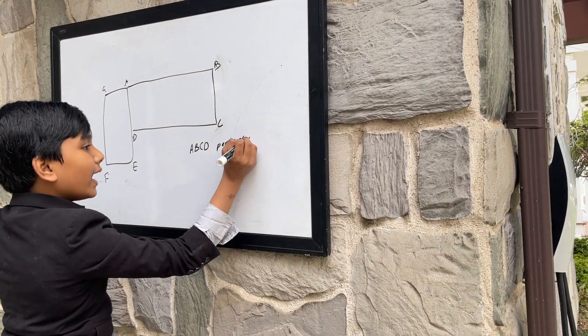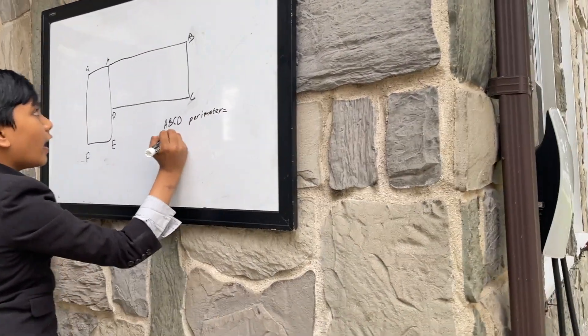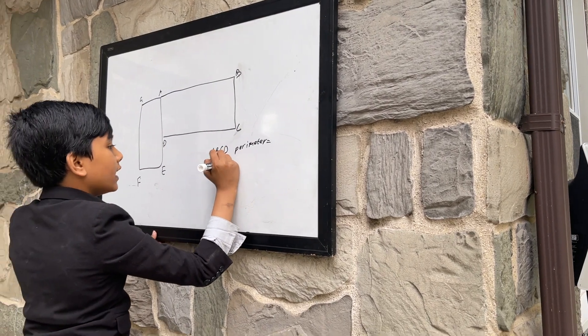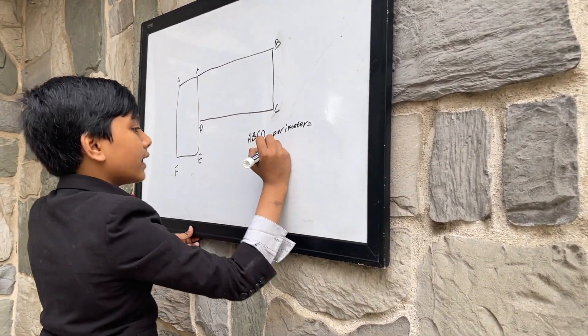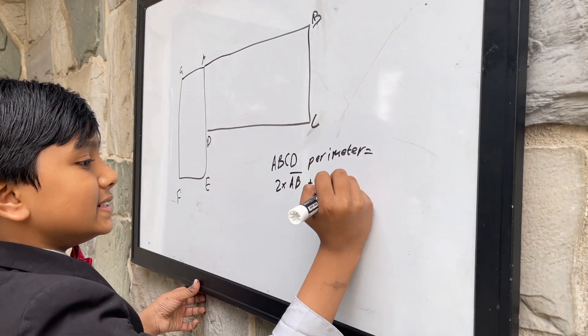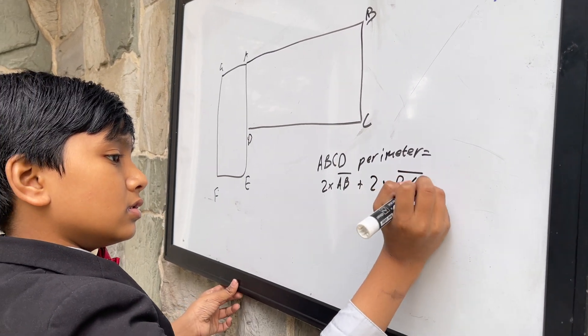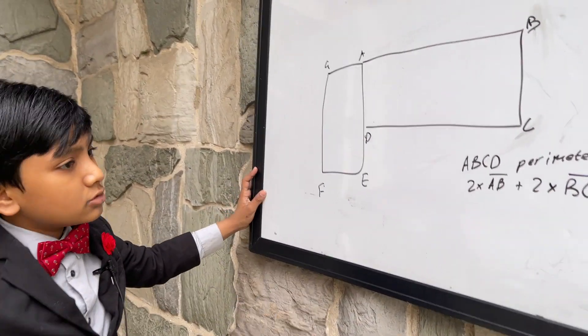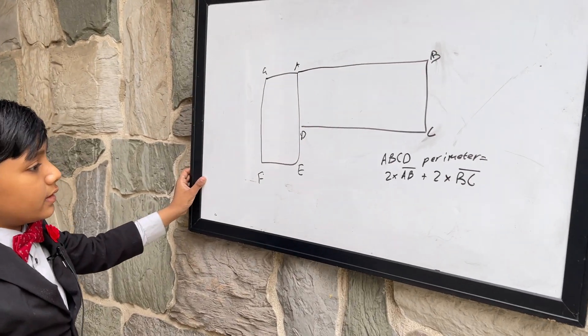And to do that, we'll have to find what the length of AB is and the length of BC is. So now, how do we find those? Well, we're given two things.